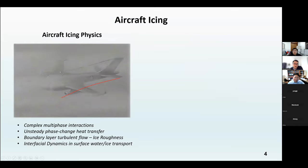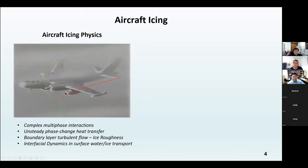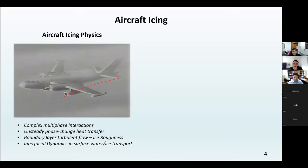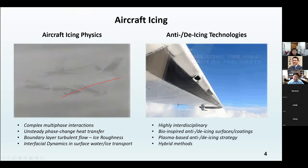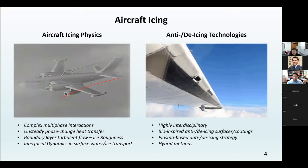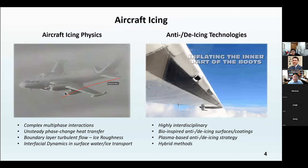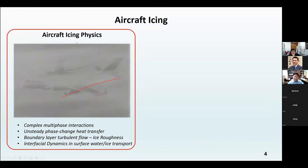For aircraft icing, this video shows how ice accumulates on an aircraft during flight — you can see on the wings and other outer surfaces the ice starting to build up. This is a very complex multiphase flow and heat transfer problem involving unsteady phase change, heat transfer, boundary layer turbulent flow, ice roughness interactions, and interfacial dynamics in surface water and ice transport. We also need to figure out methods to prevent or mitigate ice creation — that's what the different anti-icing and de-icing technologies address.